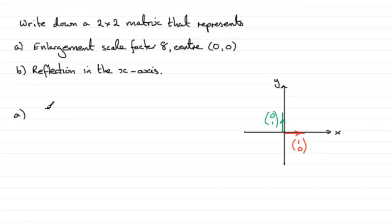So that forms the first part of the matrix, (8,0). And what happens to (0,1)? Well, this gets stretched upwards by a factor of 8, so it's going to be (0,8). And that's how I would do part A.